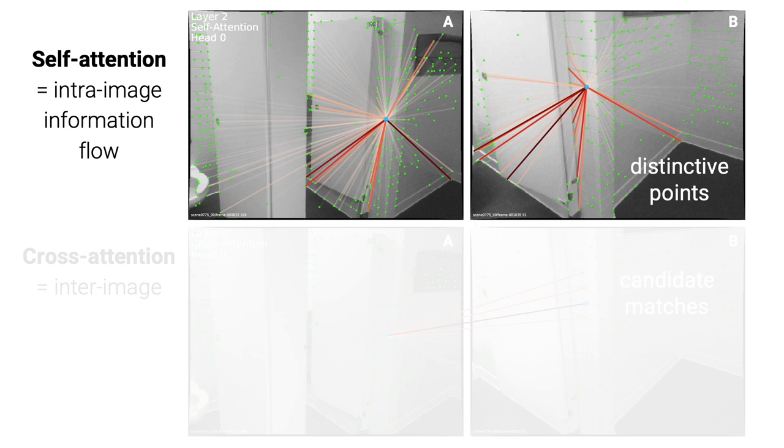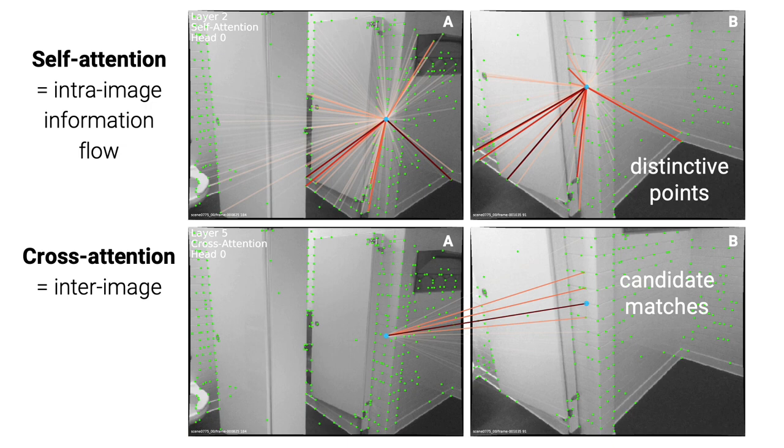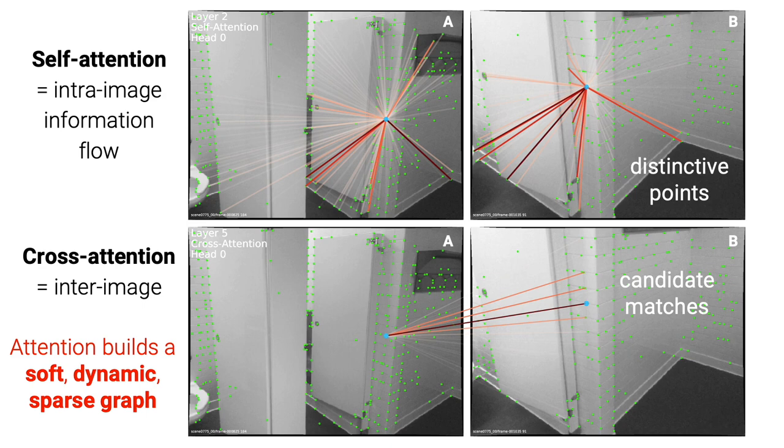Self-attention aggregates information from keypoints in the same image. It can, for example, attend to distinctive keypoints to disambiguate self-similarities. Cross-attention enables inter-image communication, attending, for example, to candidate matches. Together, they define a soft graph that is data-dependent, sparse, and interpretable.